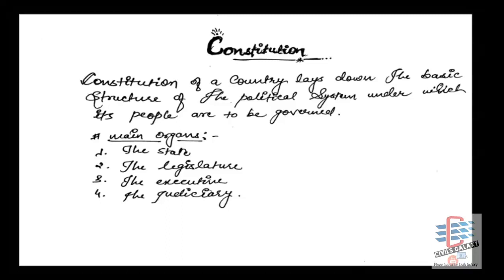What are the main organs? The state, the legislature, the executive, the judiciary — these four parts are the main structures. Now let's talk about the constitution of India. The constitution of India has a preamble — it is taken as a synopsis. There are parts, schedules, and 448 articles. So the introduction is enough.